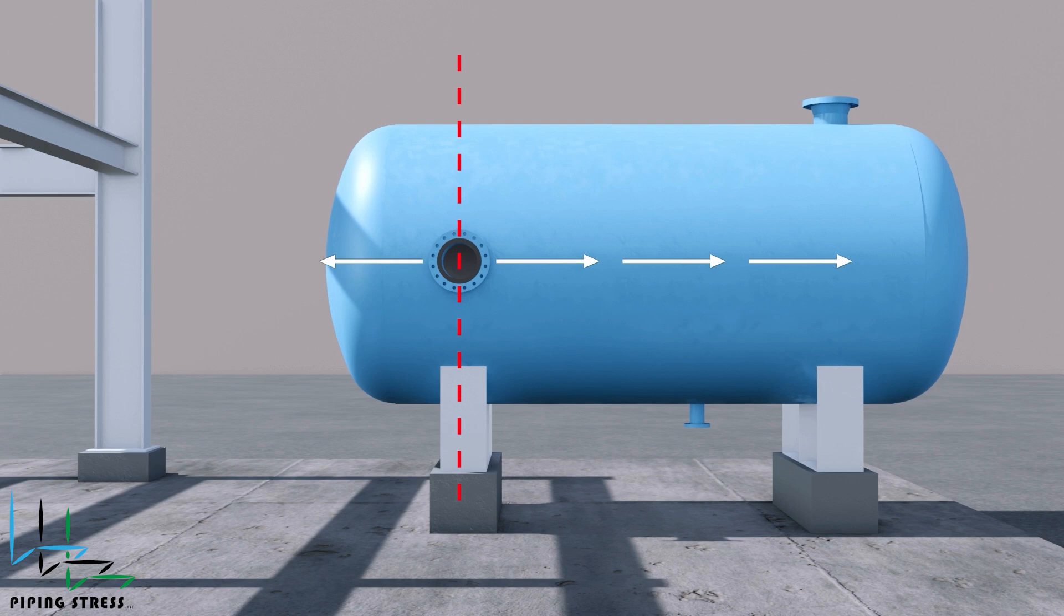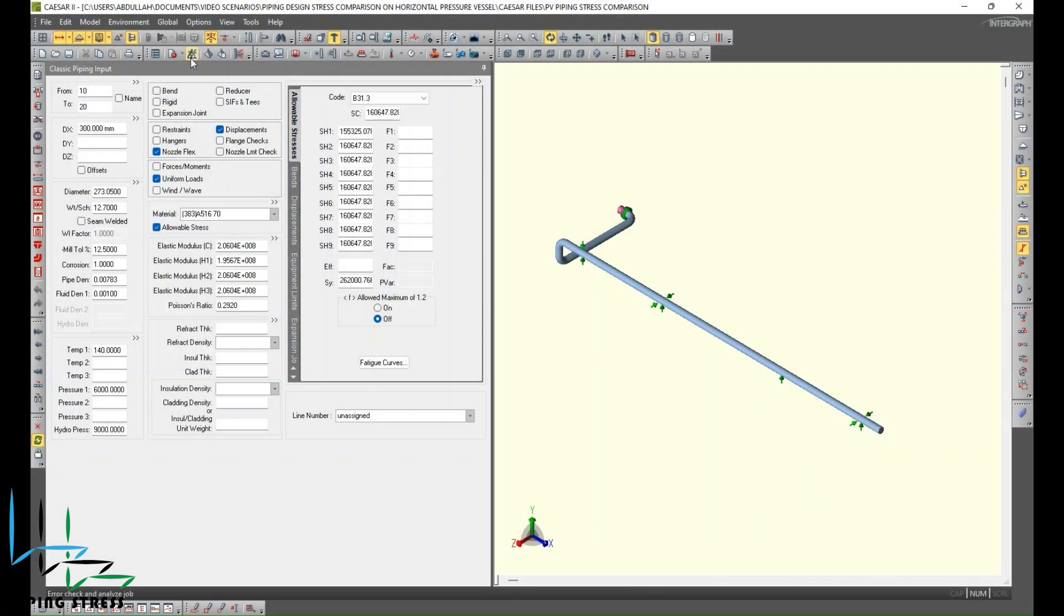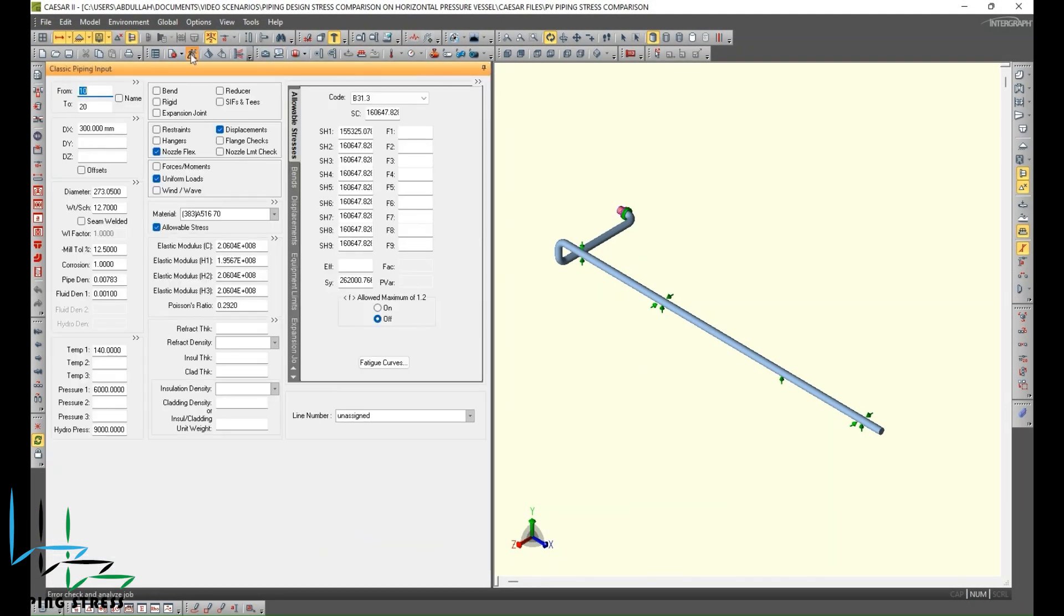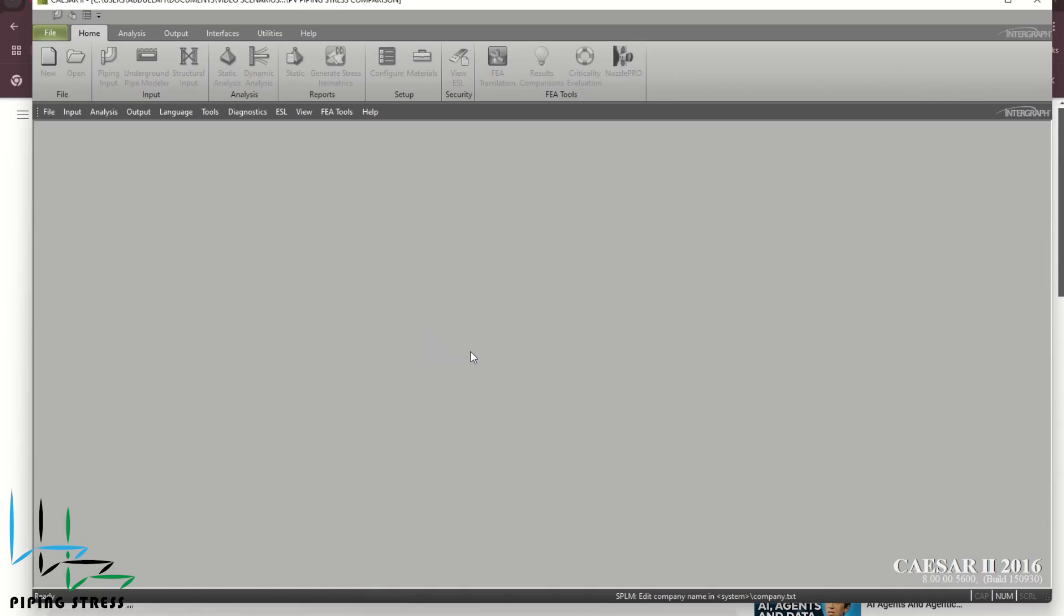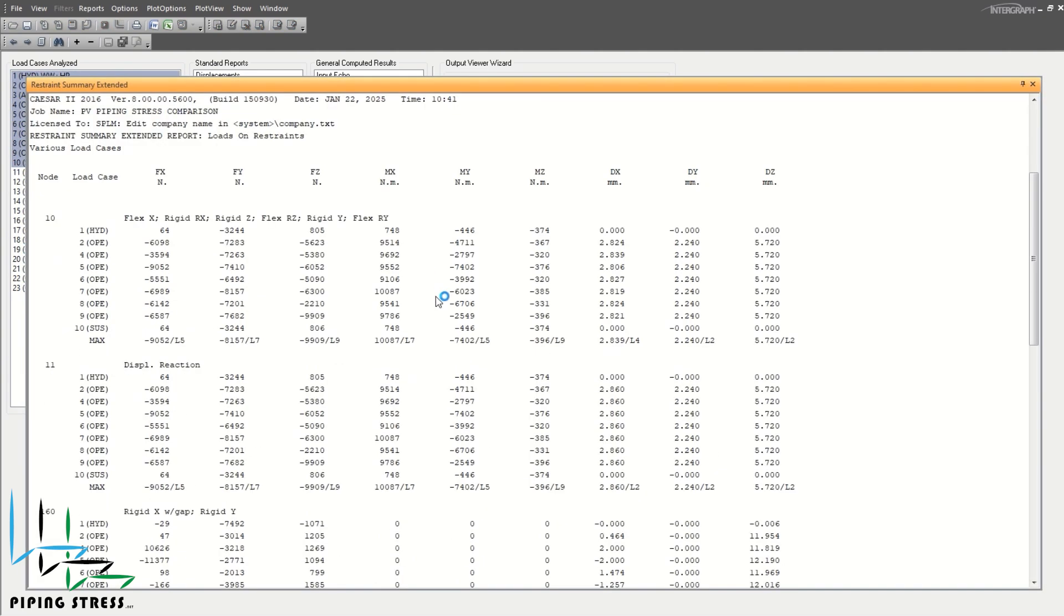Today, we are starting a new video series on our channel PipingStress.net. From now on, we will try to explain our work using Caesar 2 in our videos. First, we will show the Caesar 2 output values of several piping designs and interpret the figures. For more videos like this, please don't forget to like and leave a comment.